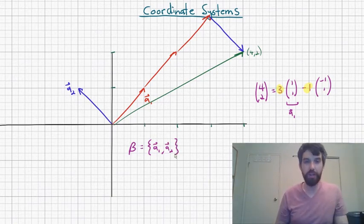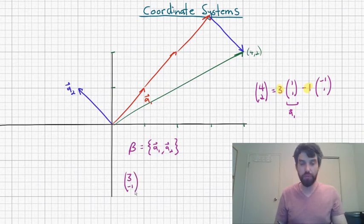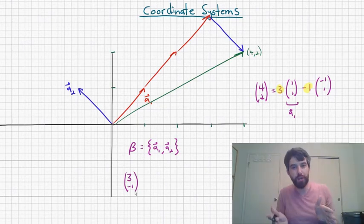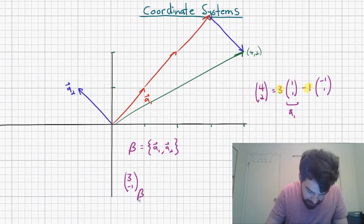And then my notation is going to be the following. I'm going to say that 3 minus 1, that's those two numbers that seemed important to us. 3 minus 1, but I wanted to note that they are in this new basis, that they're in instruction of how to manipulate this new basis.